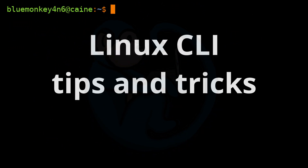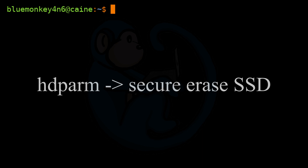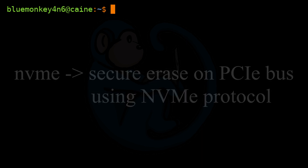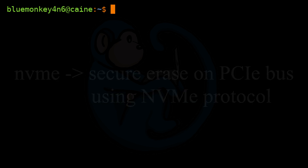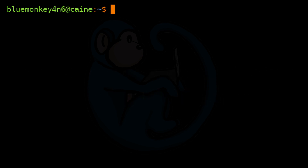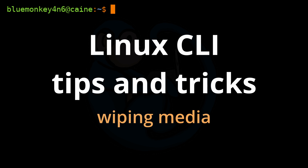That brings us to the end of this video where we learned about the concepts of wiping drives. We looked at using the command DC3DD to wipe spindle drives, hdparm to wipe an SSD, and then the NVMe command set to wipe SSDs that are on the PCIe bus. Hope you enjoyed it — if so, click the thumbs up icon to like this video. Please hit the subscribe button to get notified when the next video comes out. Please leave messages in the comment section below so I know what you liked and didn't like, or what you may want to see in future videos. See you next time.